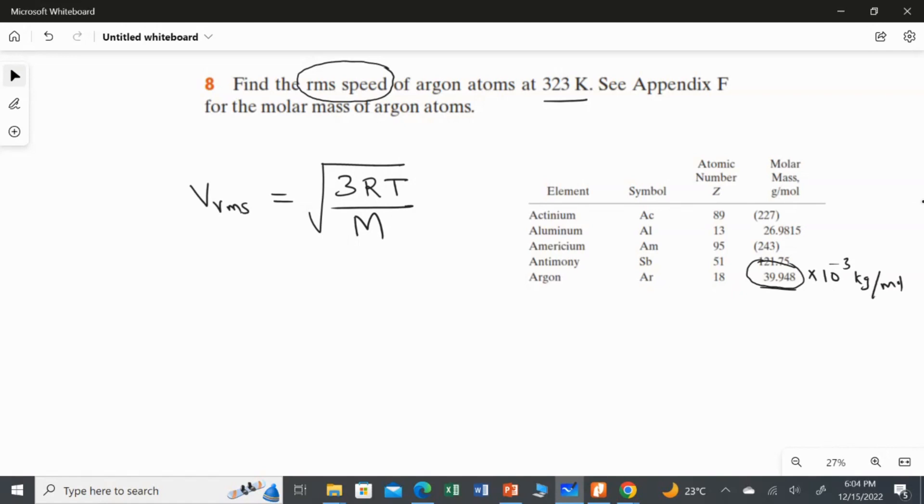Now I am going to substitute the values here. So the equation for V_RMS will become 3 multiply the gas constant 8.314 multiplied with the temperature 323 over 39.948 multiplied 10 power minus 3.